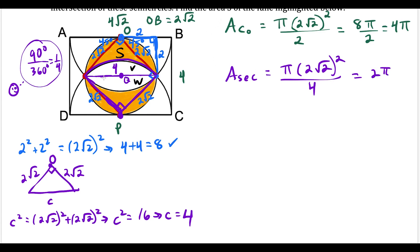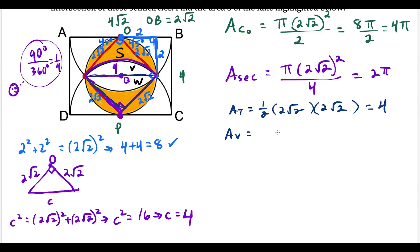Now I need to find the area of this triangle. Using one-half base times height, the base and height are both two radical two since those are the two sides separated by the right angle. So I have one-half times two radical two times two radical two — that's one-half times eight, which gives us 4. To find the area of region V, I take the area of the purple sector minus the area of the triangle: region V equals two pi minus 4.